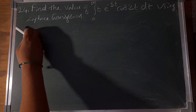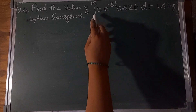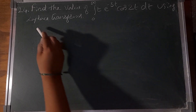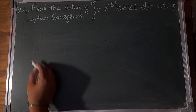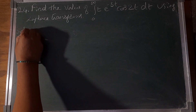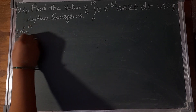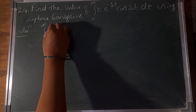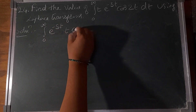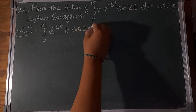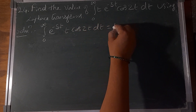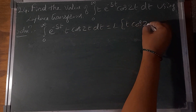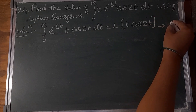Problem number 24: Find the value of the integral of 0 to infinity of t e^(-3t) cos(2t) dt using Laplace transforms. The integral of 0 to infinity e^(-st) t cos(2t) dt equals the Laplace transform of t cos(2t). Call it equation number 1.